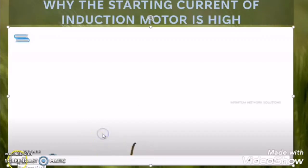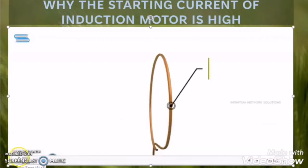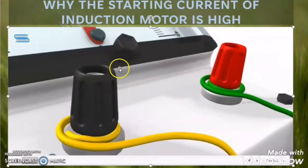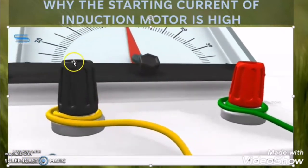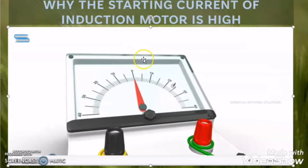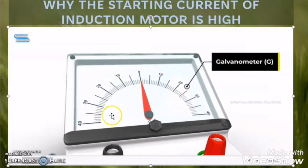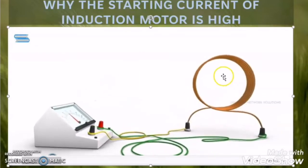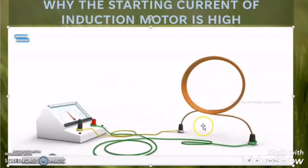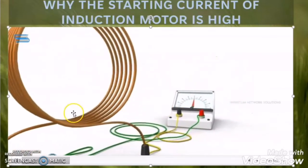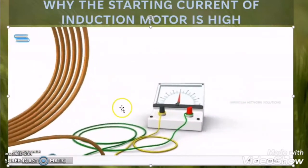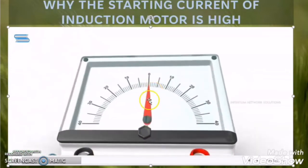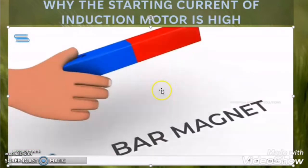In order to understand Faraday's law of electromagnetic induction, let us take a copper-made coil and a galvanometer, and connect this galvanometer with the copper coil in the same arrangement. As this arrangement is free from any electrical connection, so there will be no deflection in the galvanometer.